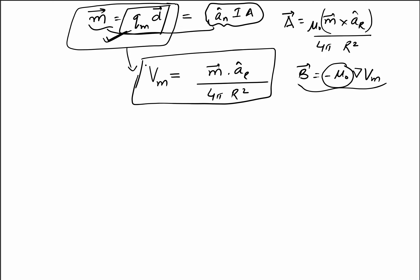This is how we can find the magnetic scalar potential in a region where there are no sources of current densities due to a magnetic dipole. We can utilize either the vector potential formula or the scalar potential formula in regions where there are no current densities.